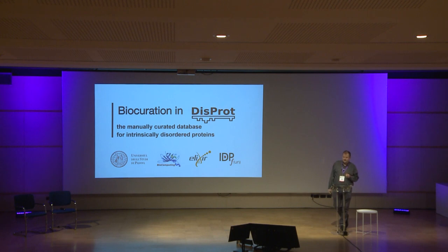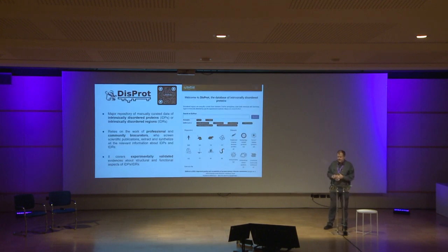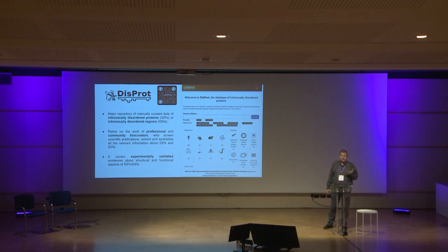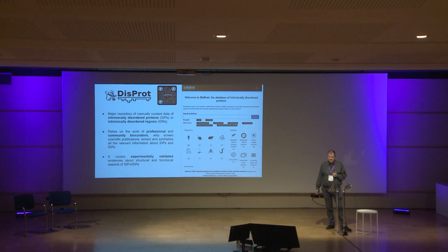I'll be talking about biocuration in DisProt, which is the manually curated database for intrinsically disordered proteins. DisProt is the major repository for manually curated data of intrinsically disordered proteins and intrinsically disordered regions — basically the parts of the proteome which are more or less moving and in extreme cases behaving like cooked spaghetti in water. They're widely overlooked, but with AlphaFold 2 it's become obvious that about 40% of the human proteome falls into this category.